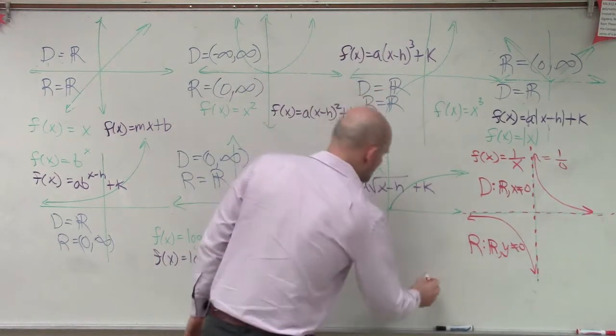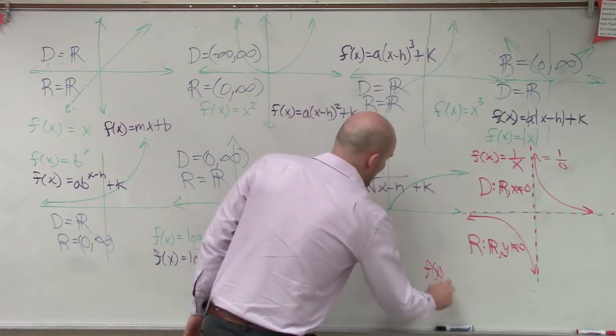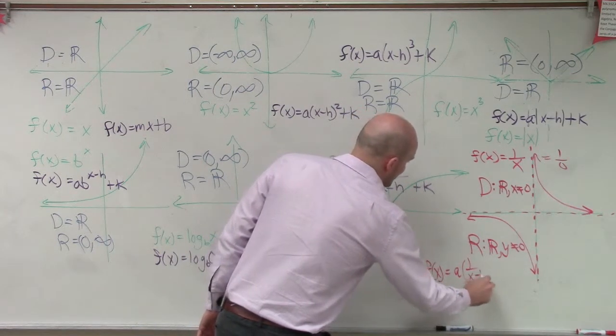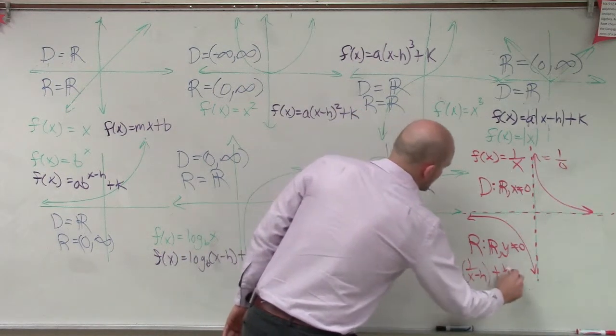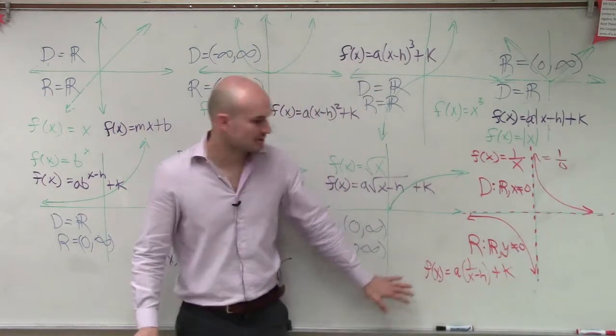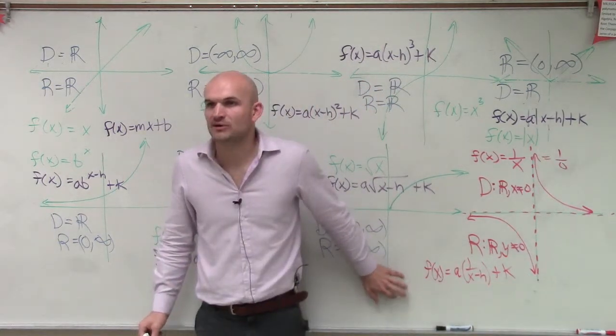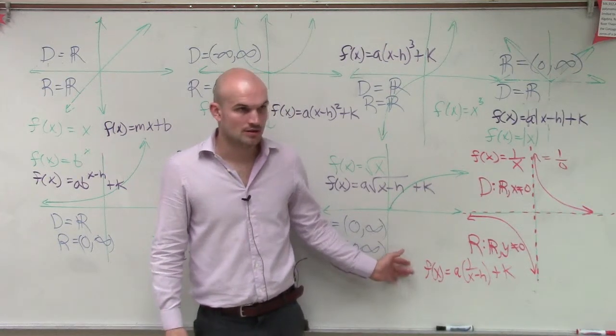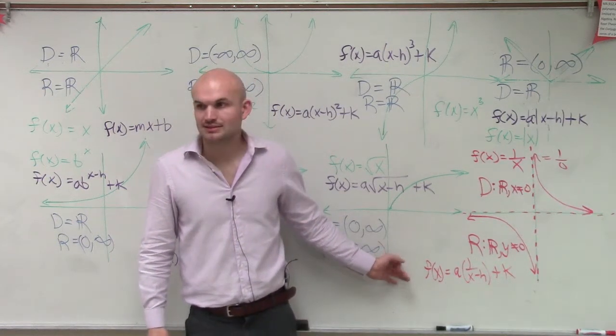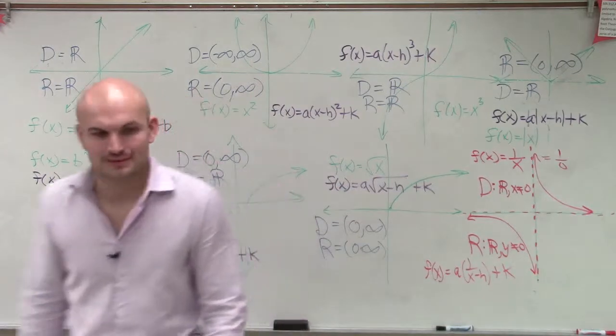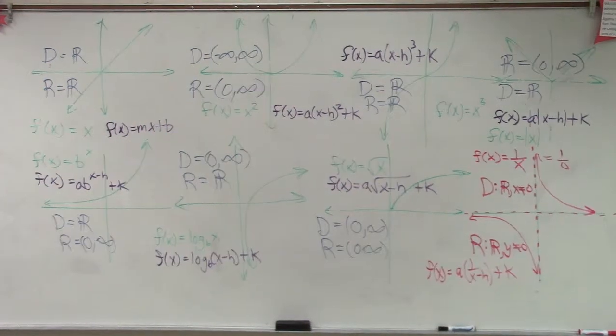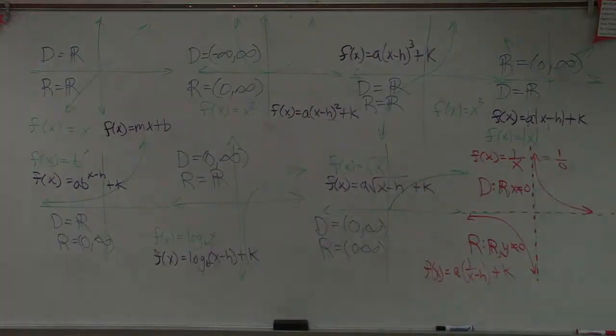So our function for this is going to be f of x equals a times 1 over x minus h plus k. You guys are going to want to write that one down. That's going to be a big one. So that's it. Wow.